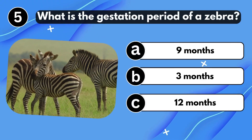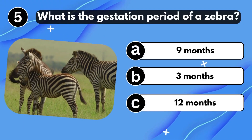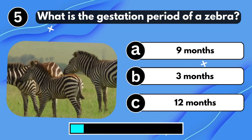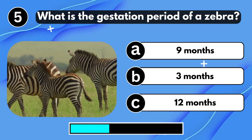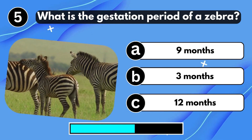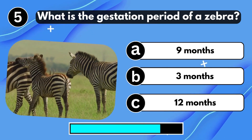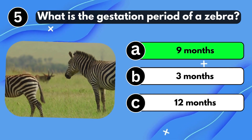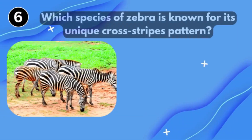What is the gestation period of a Zebra? 9 months.